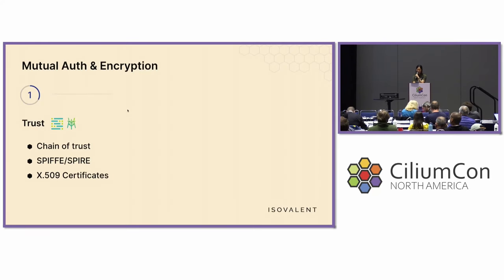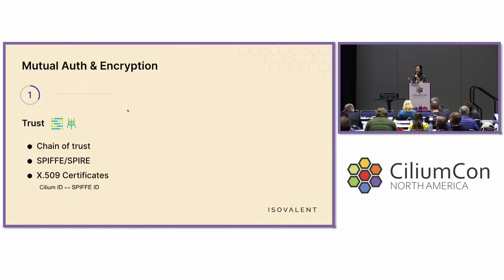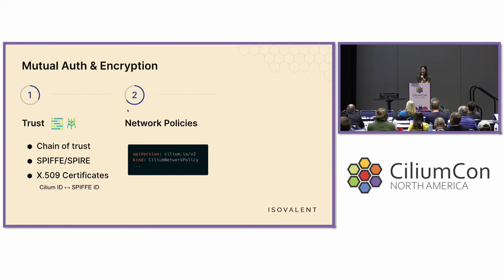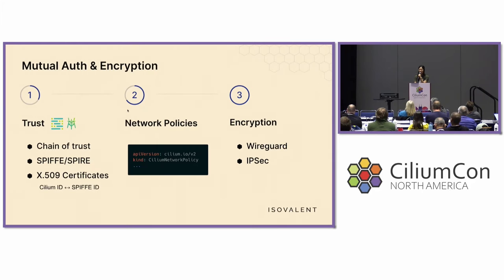We have X.509 certificates, and it's that logical mapping of the Cilium ID — which you're probably familiar with if you've used Cilium before — mapping over to the SPIFFE ID. We also have network policies, something that's been part of Cilium. And lastly, encryption, also something Cilium has been offering: with WireGuard and IPsec, it's a little flag you just have to enable when you install Cilium.